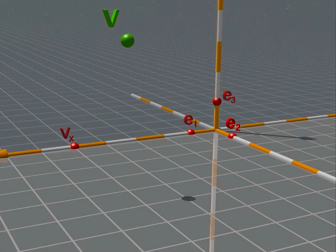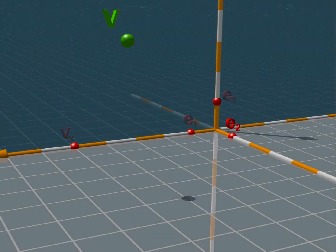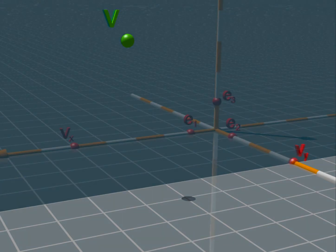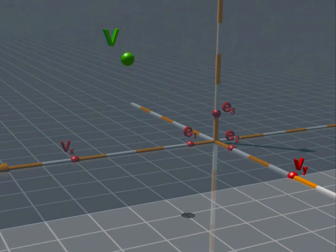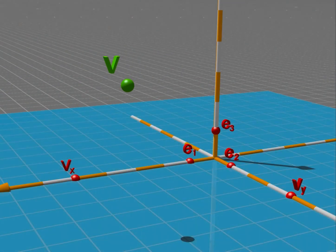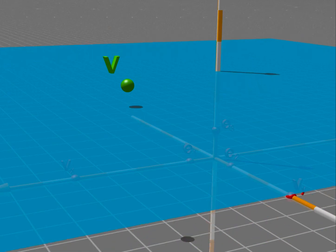Now we do the same for all the other axes and using the appropriate coordinate planes. So now we got the vy and here is the vz.